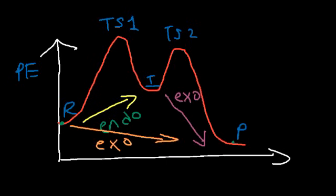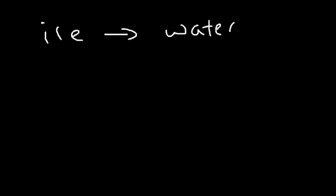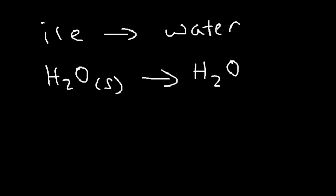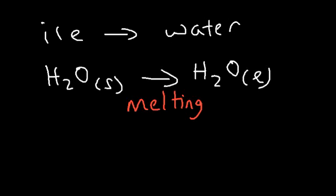So now you know how to analyze a potential energy diagram and can tell which steps are endothermic and which ones are exothermic. Now let's talk about phase changes. When ice melts into liquid water — solid H2O converting into liquid H2O — this is called melting. In order to melt ice you need to add heat to it, so because the ice needs to absorb heat, delta H is positive and this is an endothermic process.